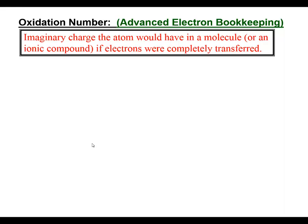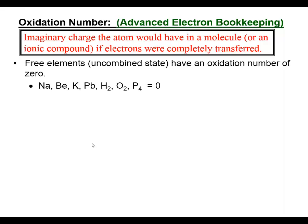If I have a free element present without a charge - just an elemental species - those oxidation numbers are all zero. Sodium metal, beryllium, potassium metal, lead metal - those all have zero oxidation numbers. Even if they exist as molecular elements such as diatomic hydrogen, diatomic oxygen, or polyatomic phosphorus, we still assign their oxidation number as zero.